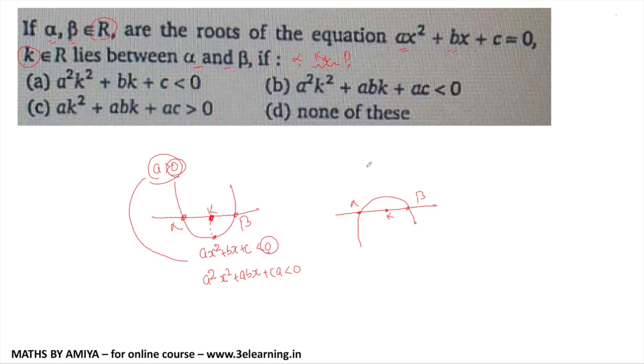We have another graph. When we get this graph, when the a is negative, when we have the coefficient of x square is negative, graph is downward. But if we substitute k in this,